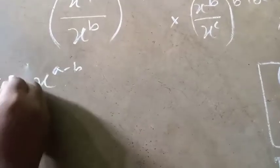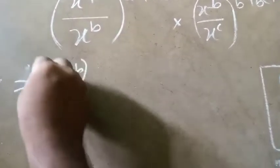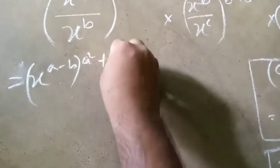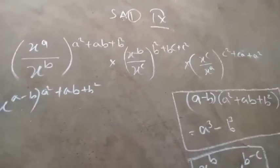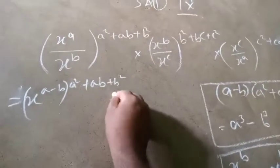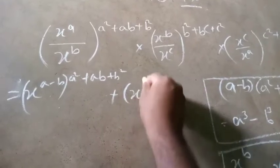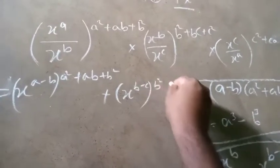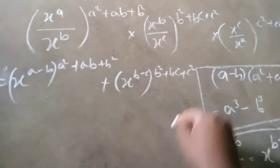That is what we call x to the power a minus b, whole to the power a squared plus ab plus b squared. Then, the plan is what we call x to the power b minus c, whole to the power b squared plus bc plus c squared.